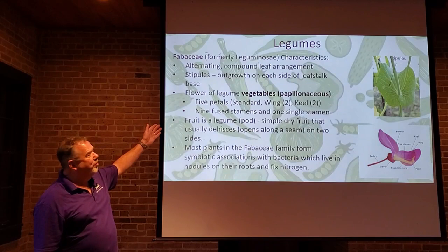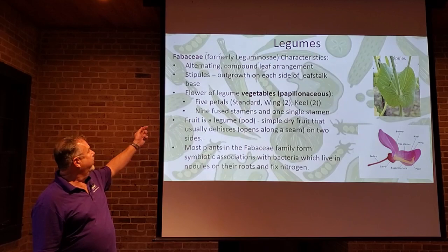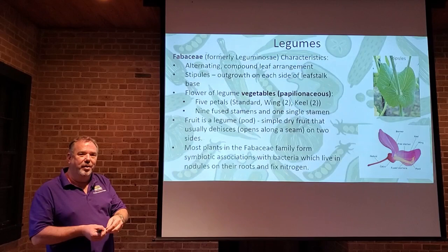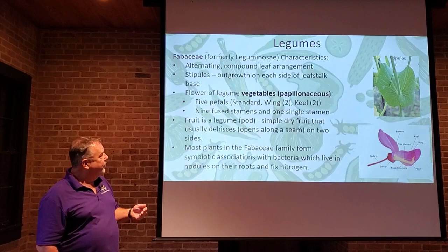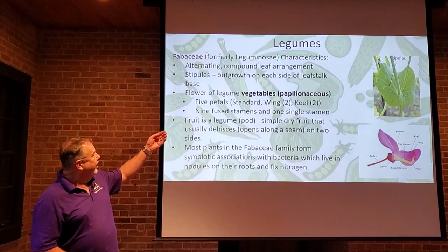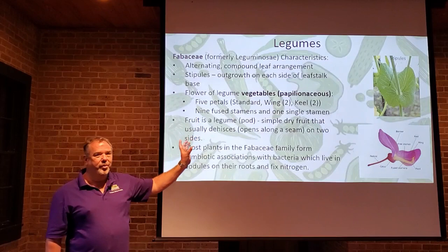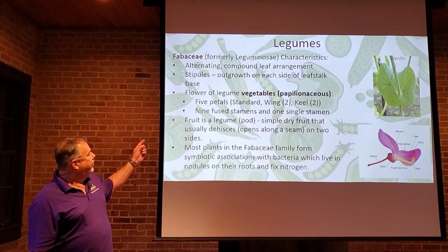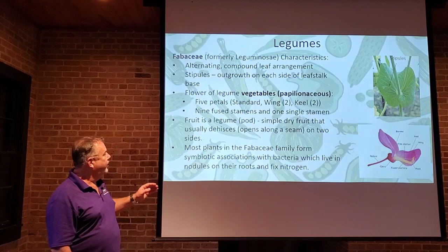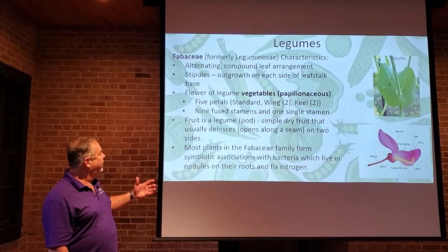The legumes are in the Fabaceae family, formerly the Leguminosae family. The characteristics are they have an alternating compound leaf — a leaflet composed of multiple leaves. They alternate, one then another, and at the base of that stalk there's a little stipule, a small round cup-like leaf growing at the base of the leaflet. The flowers of the legume vegetables are all papillionaceous, which means they kind of resemble butterflies.